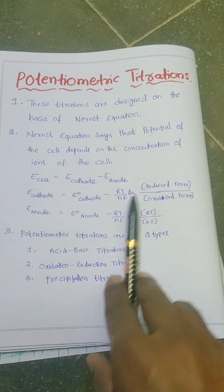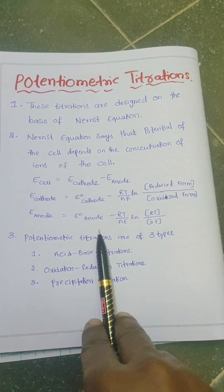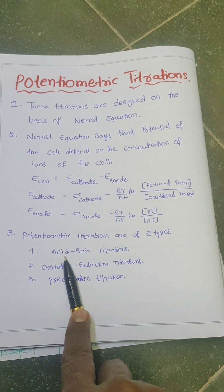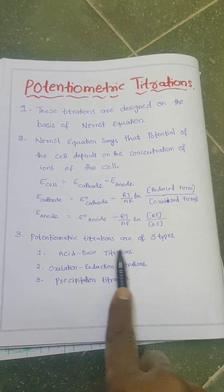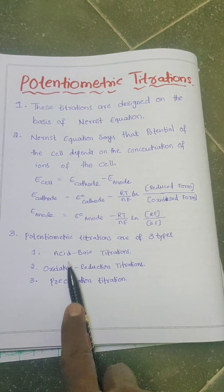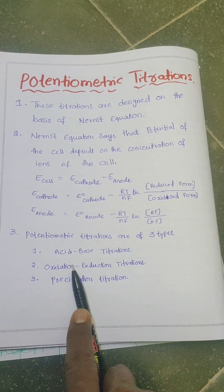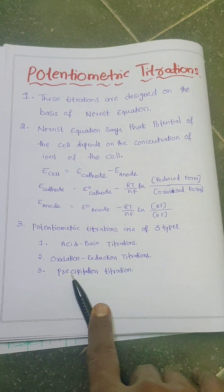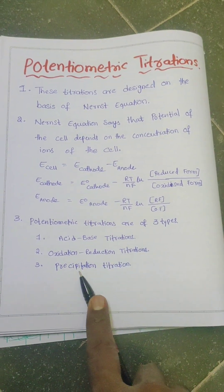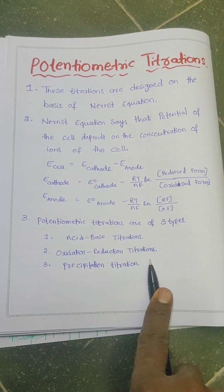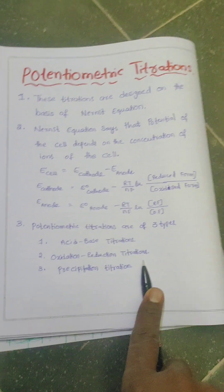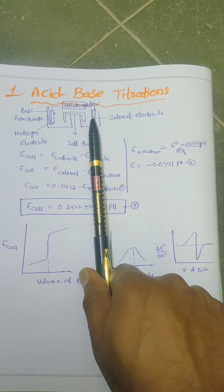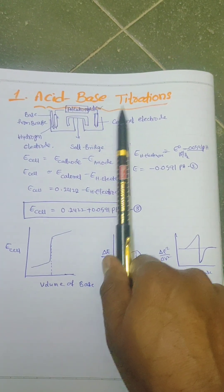Potentiometric titrations are of three types. First is the acid-base titrations, second is the redox titrations or oxidation-reduction titrations, and third is the precipitation titrations. First of all we will discuss about the acid-base titrations.